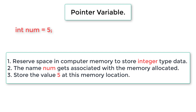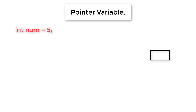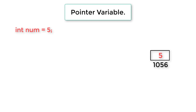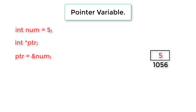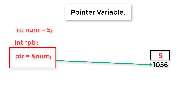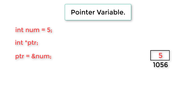Next it stores the value 5 at this memory location. Consider this as a cell in your memory which has a unique address. Your program stores 5 at this address. We declare a pointer variable as `int *ptr` — you could also write `int* ptr` or `int * ptr`. We point this pointer to the address of `num` by writing `ptr = &num`, which means address of `num`. So we are storing the address of `num` into the pointer variable `ptr`.